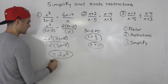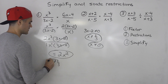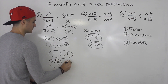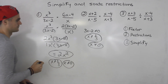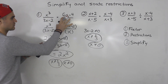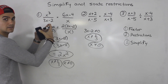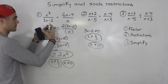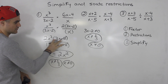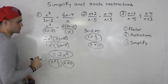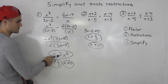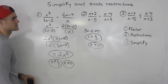The final answer is 2x squared, with restrictions x cannot equal 2 over 3 and x cannot equal 0. So when multiplying: first factor everything, then get the restrictions, then combine all the fractions into one fraction, and simplify that rational expression. In this case, we end up with 2x squared.